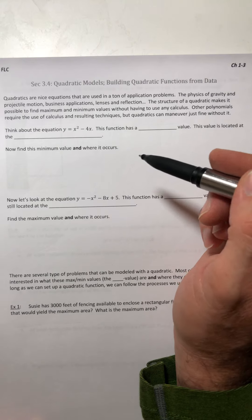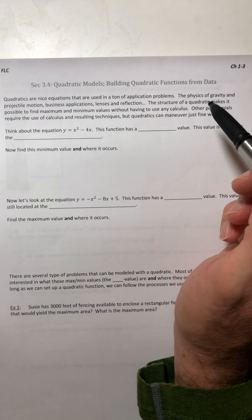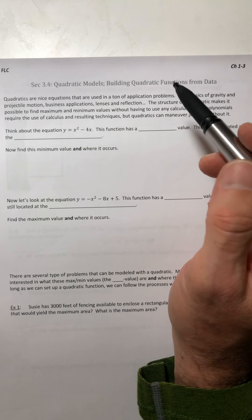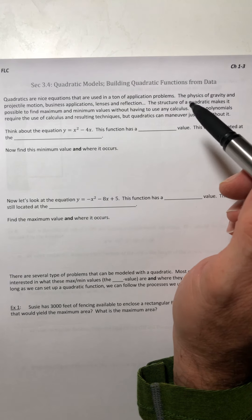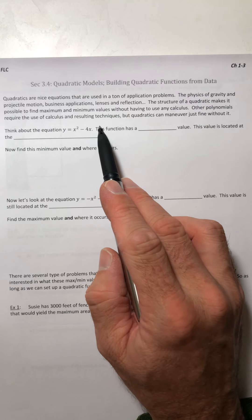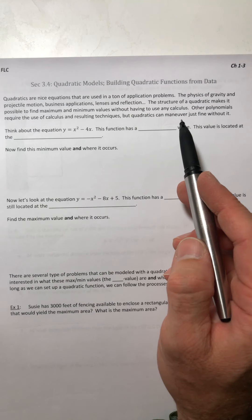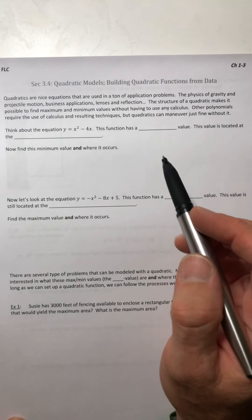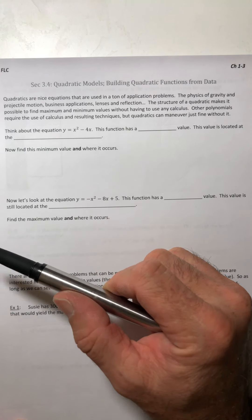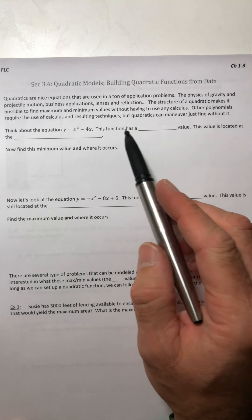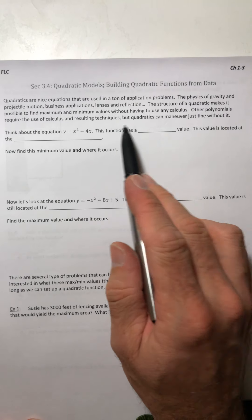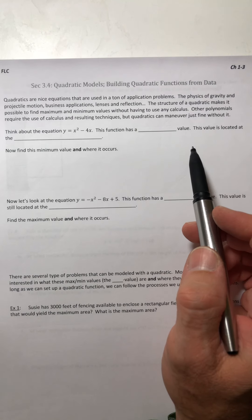So quadratics, they're nice equations that are used in a ton of application problems. The physics of gravity and projectile motion, business applications, lenses and reflection, the structure of a quadratic makes it possible to find maximum and minimum values without having to use any sort of calculus. We can just use algebra. Other polynomials require the use of calculus because if you did algebra with other polynomials it would get really crazy. Quadratics you don't have to. They can maneuver just fine without calculus.